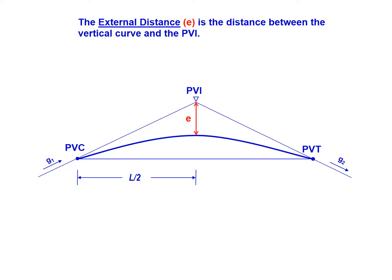Similar to the middle ordinate, we have the external distance E. This is the distance between the vertical curve and the PVI. That's a common term that's denoted on vertical alignment drawings.